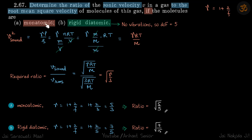Gamma for monoatomic gas is 5 by 3, which comes from this formula. Gamma is 1 plus 2 by F. For monoatomic gas, only translational degrees of freedom are there, that is 3. So 1 plus 2 by 3 equals 5 by 3. This gives our answer: ratio is sqrt(5 by 9).